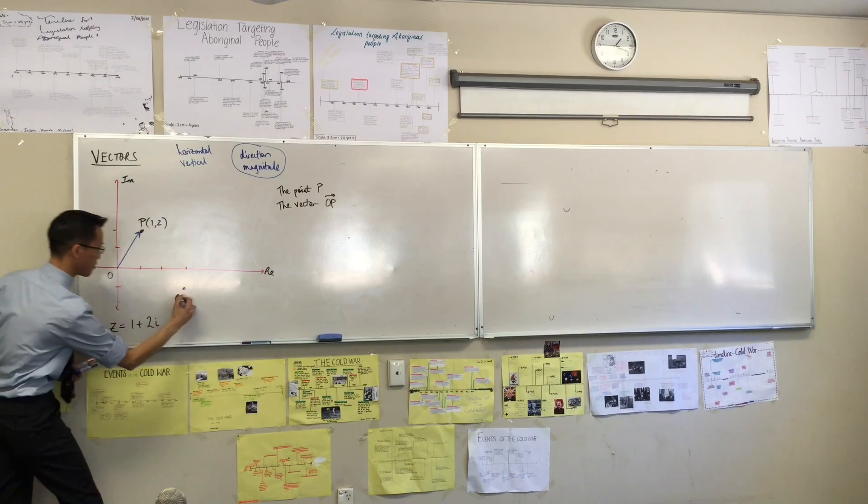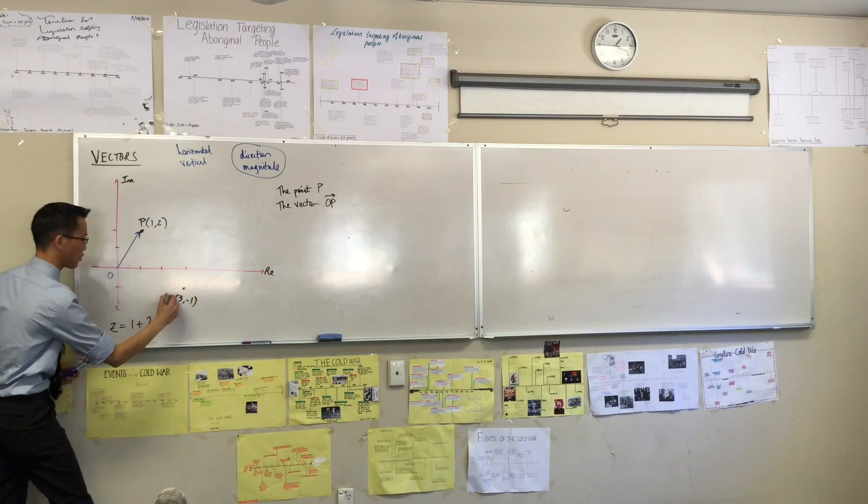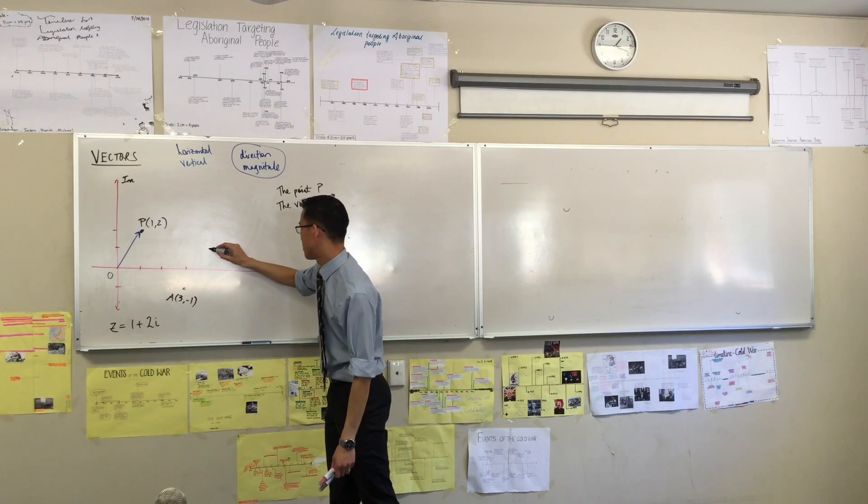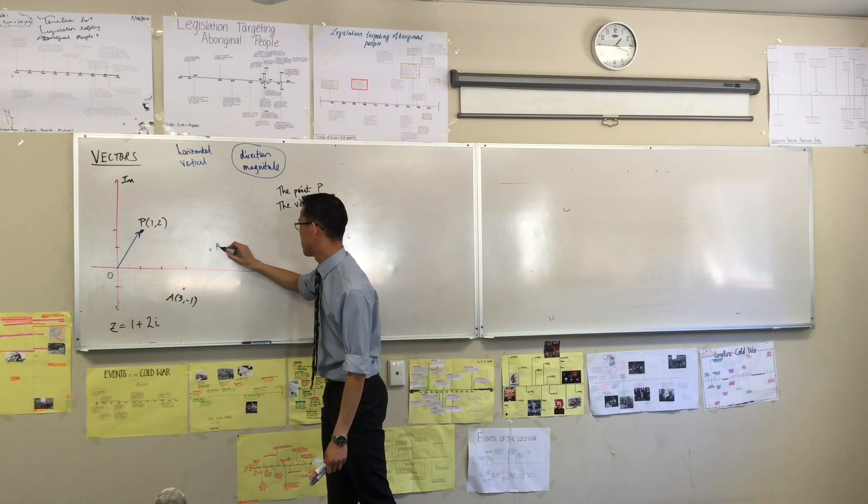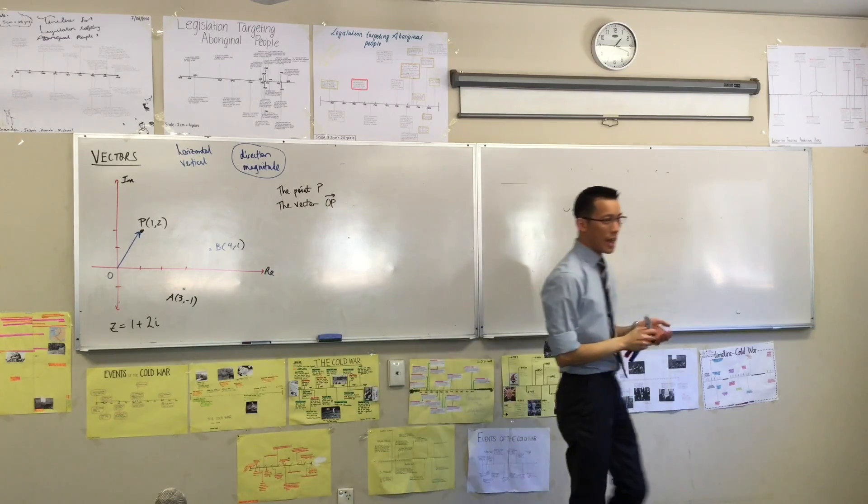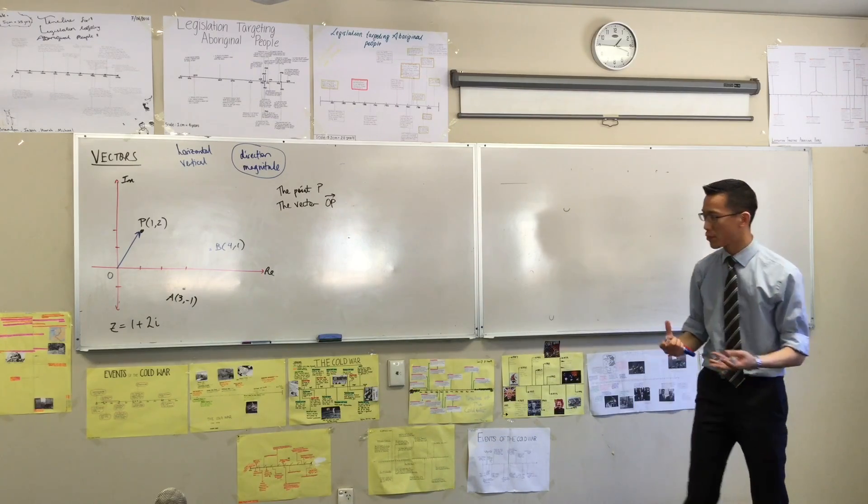This one here, what's that? That's 3, negative 1. Let's call that A. And here. What's this going to be? 4, 1. Okay. Now, neither of these points represent 1 plus 2i.